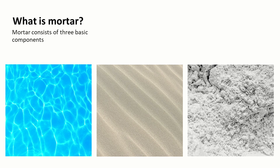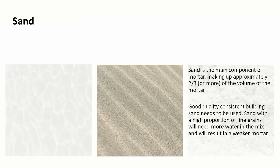Mortar is made up of three basic components. Sand is the main component — it makes up approximately two-thirds or a little bit more of the volume of the mortar, and a good quality consistent building sand is what needs to be used. If we have very fine grains of sand within that mix, we will effectively need more water to make the mortar, and that's going to result in a weaker mortar.